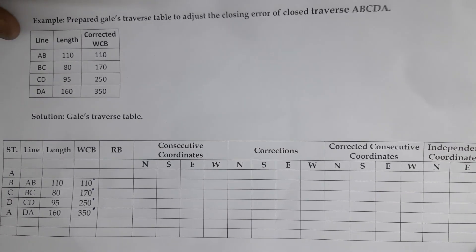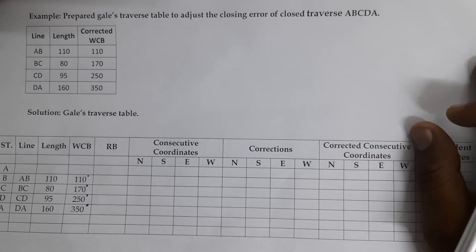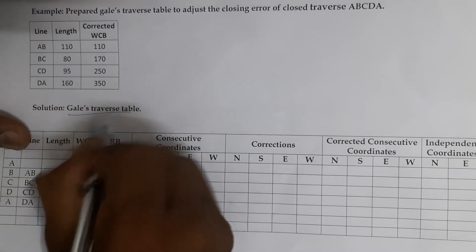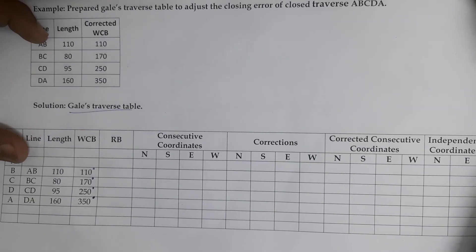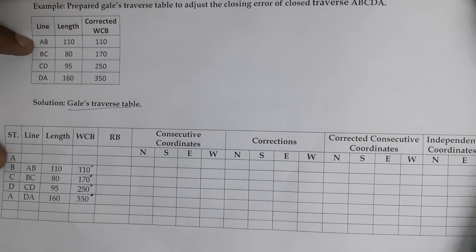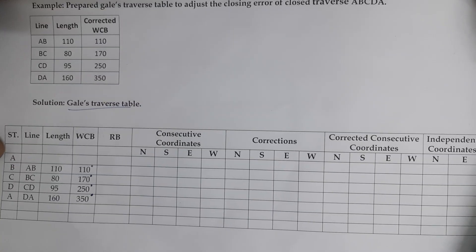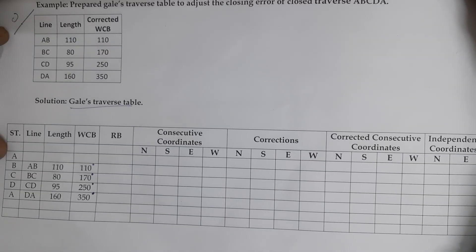In the previous lecture we discussed the transit rule and the boundaries rule. Our next method is the Gale's Traverse method. In a Gale's Traverse table, the data given is the length of the line and the bearing, or the coordinates — specifically the WCB (Whole Circle Bearing) is given.